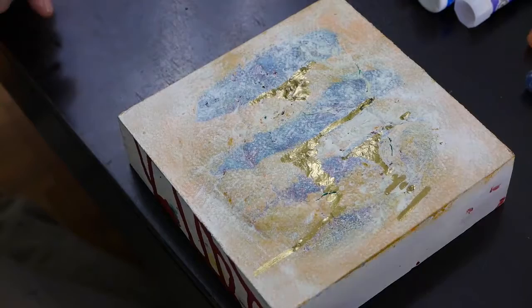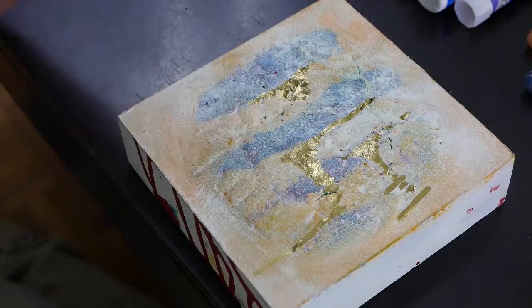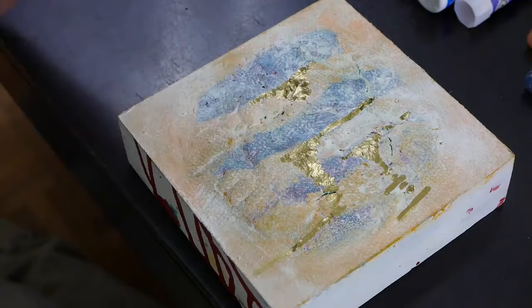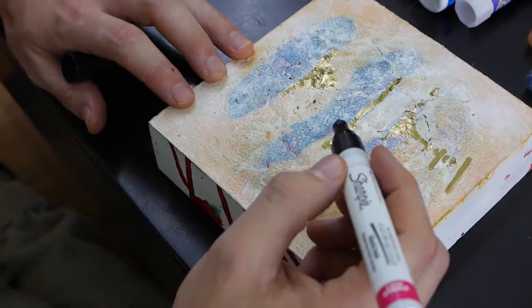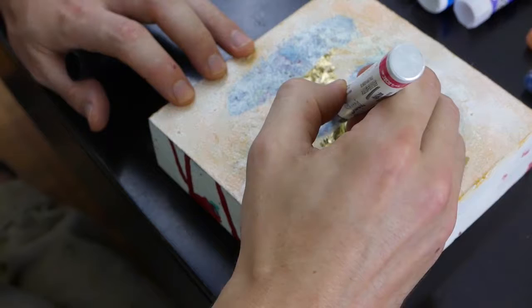The next one, let's look at Sharpie black oil-based. Keep a lookout for these because they possibly won't be in your art supply section. They may be in office supplies but they're amazing. What makes the oil different from the water-based is that it is glossy and super dense. It covers up everything.